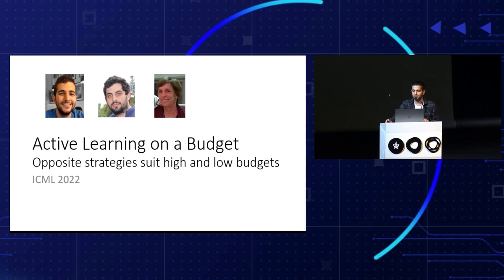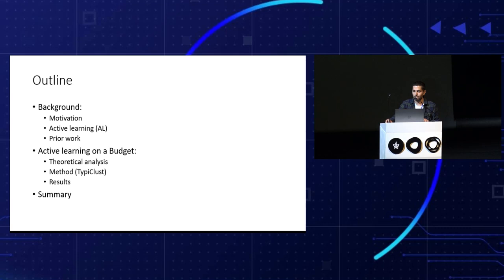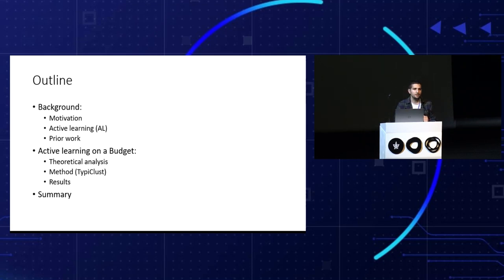Let's start with the outline. We'll start with some background, the motivation, what is active learning, and some prior work. And then we'll start talking about the paper's contributions, which is a theoretical analysis, a method, and experimental results, and then we'll summarize.